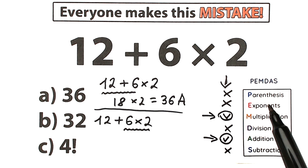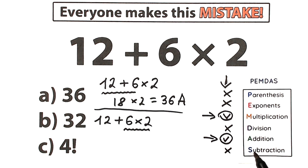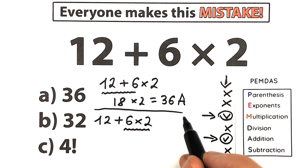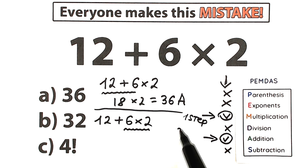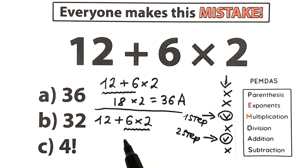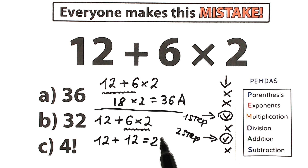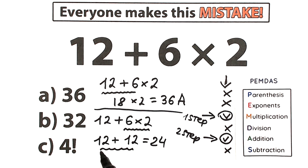As I said, parentheses have the highest priority and addition and subtraction the lowest. So what do we do first? We multiply first. Going from the highest to lowest priority, multiplication is the first step and addition is the second. So 6 times 2 equals 12, and then 12 plus 12 equals 24. That last step is addition.